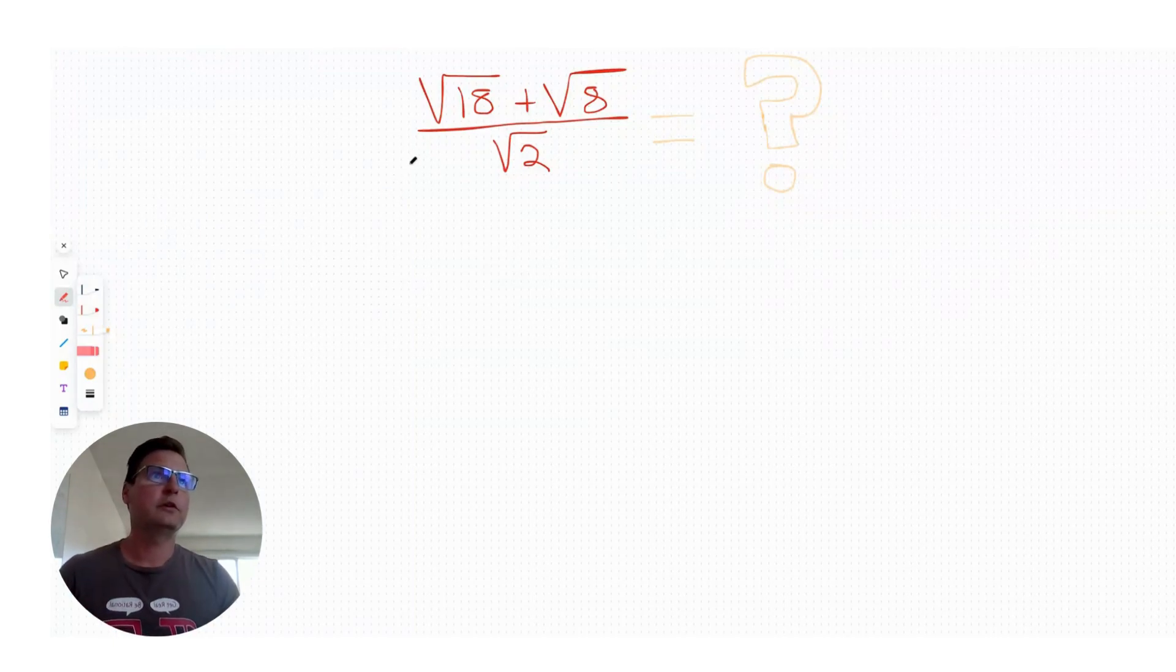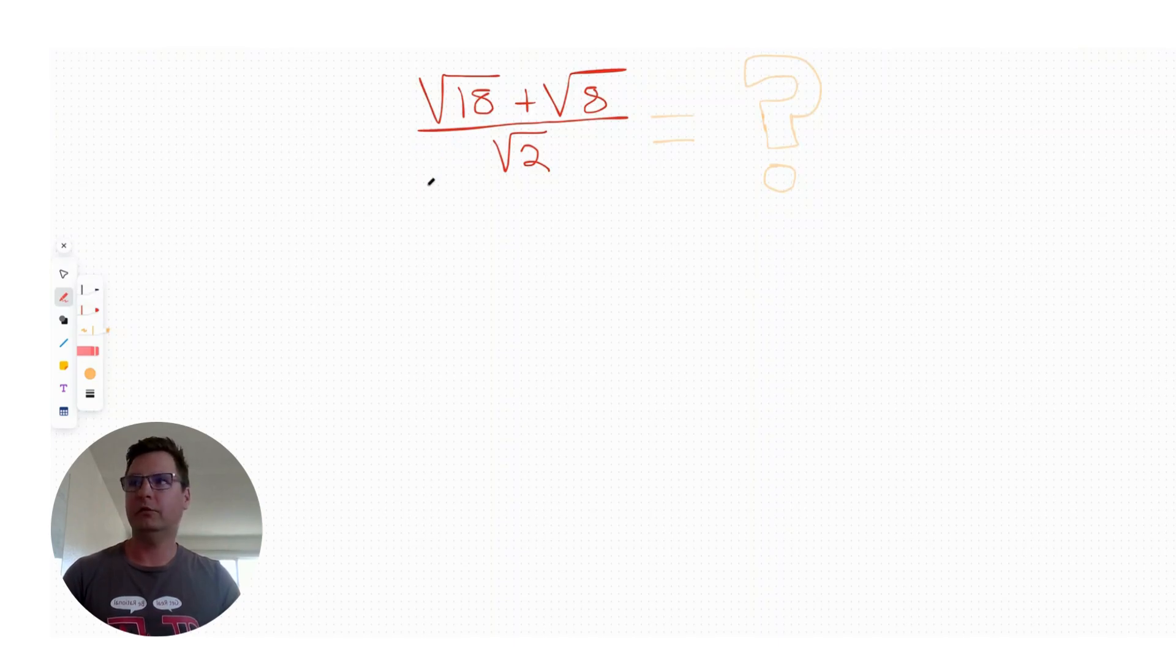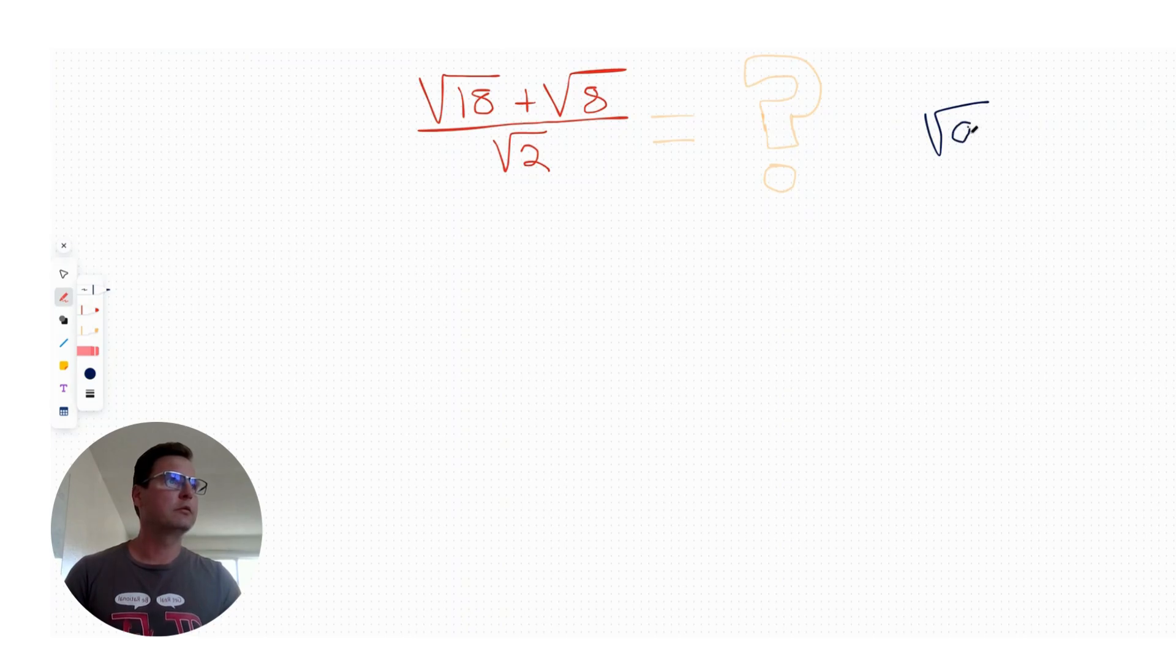A first look at this expression here might be a little bit scary because how do we take the square root of something like this? Because what's the square root? It's what do you multiply together to get that number, right? So, for example, the square root of 9 is 3 because 3 times 3 equals 9. But what about a number multiplied by itself to get 18? That one, I don't know.